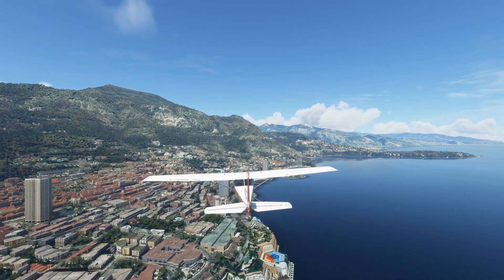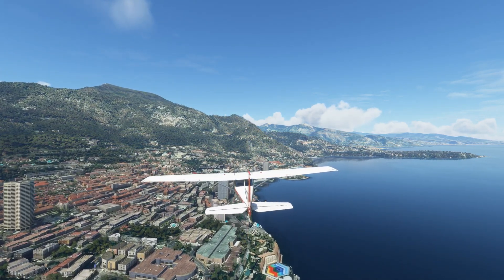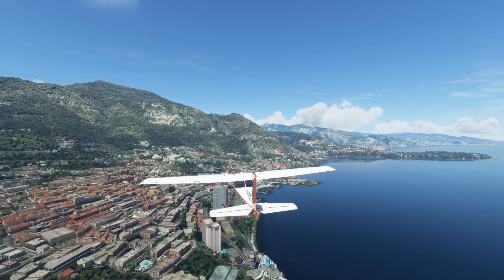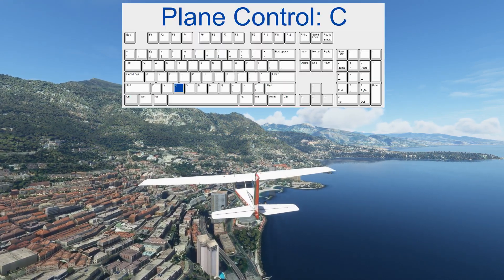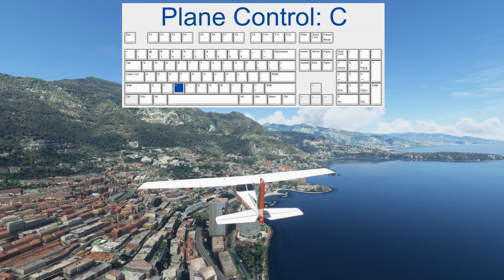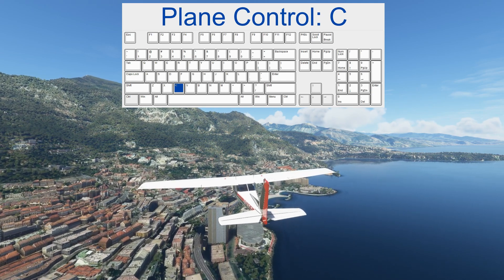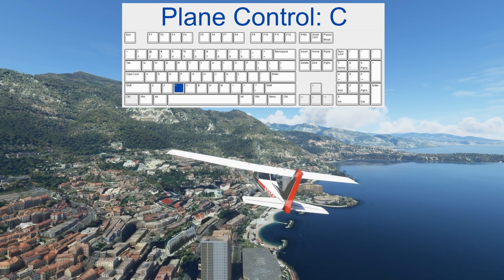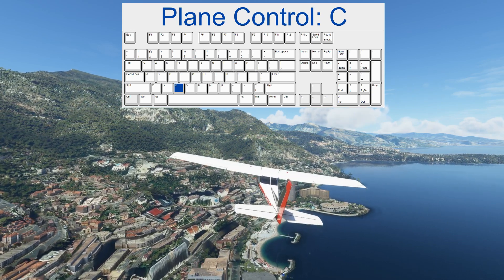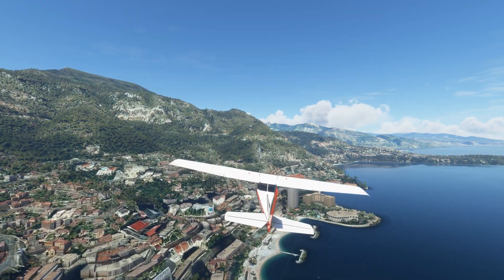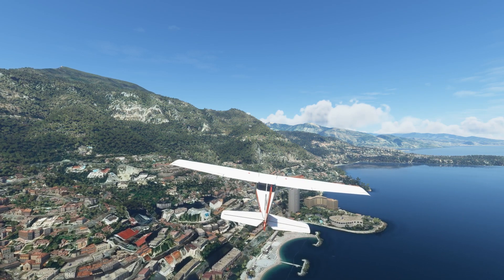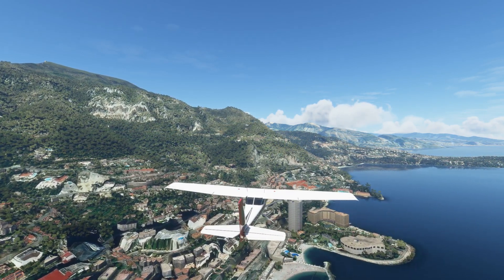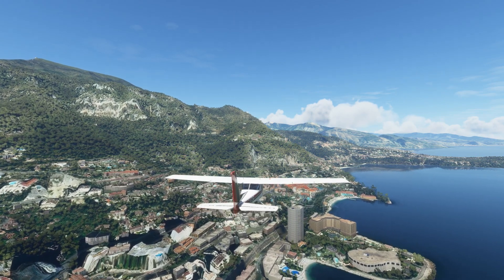Moving the joystick but nothing is happening — the airplane is not controllable in drone mode. Luckily there is a shortcut for that: the C key. Pressing it allows me to control the airplane again, though you don't have any HUD like in the external view, so it is a little uncertain what is really happening.